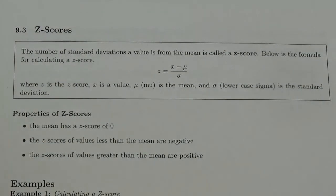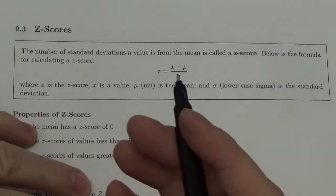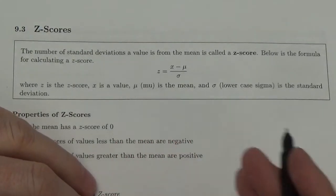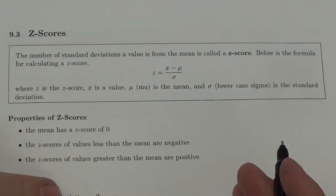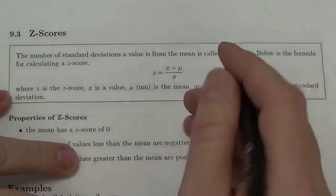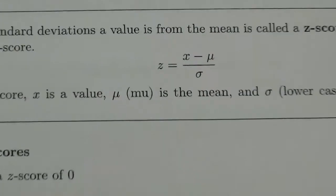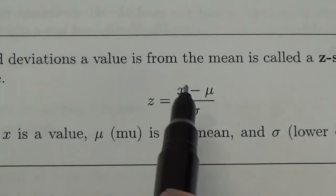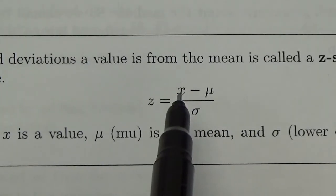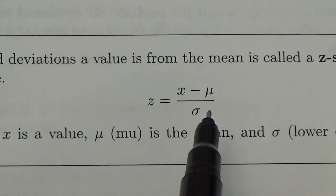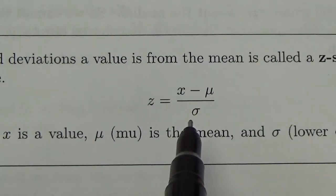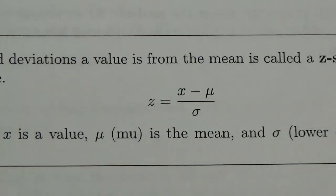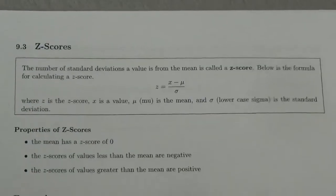A z-score is the number of standard deviations that you are away from the mean. The formula for the z-score is: the data value minus the mean, divided by the standard deviation. That's how we figure out the z-score.